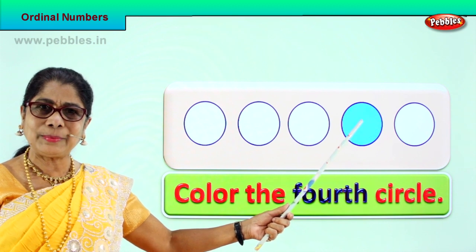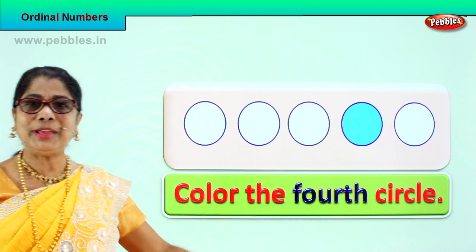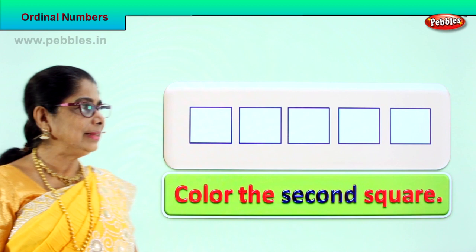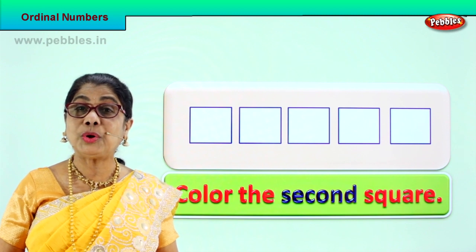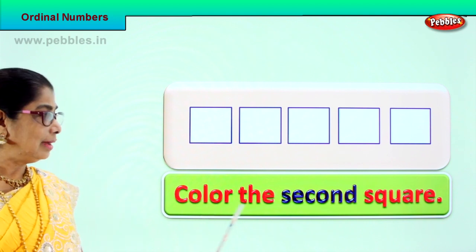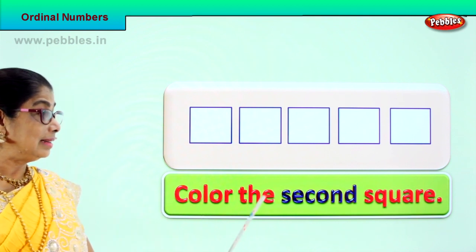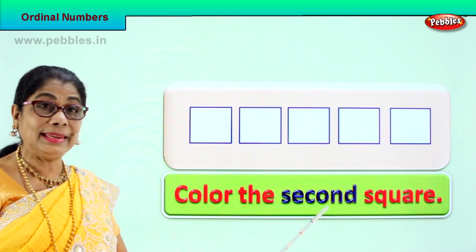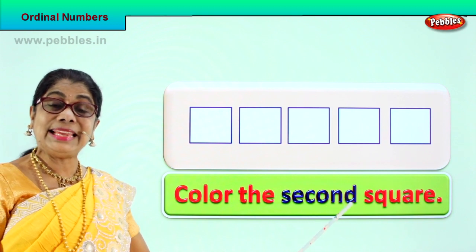We have colored the fourth circle. Did you enjoy the exercise? Color the fourth circle — and this is the fourth circle and we have colored it. Shall we take another exercise? Here is another exercise. Read with me: color the second square. Spell second: S-E-C-O-N-D. Second.